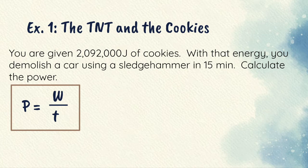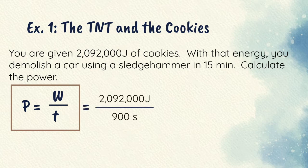So let's say that I give a human 2,092,000 joules of cookies. That's an equivalent of approximately 500 food calories. So I give you a bunch of energy to start. And with that energy, I want you to do work on this car. So you do 2,092,000 joules of work on the car in 15 minutes. Notice that I changed minutes to seconds. This gets me a power of 2,324 watts, which is actually a very, very large amount for a human.